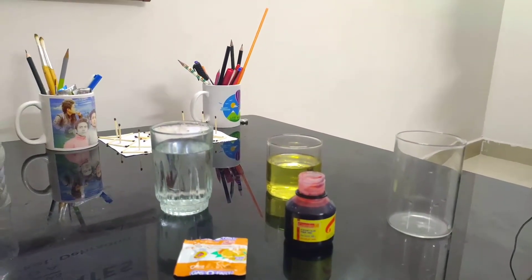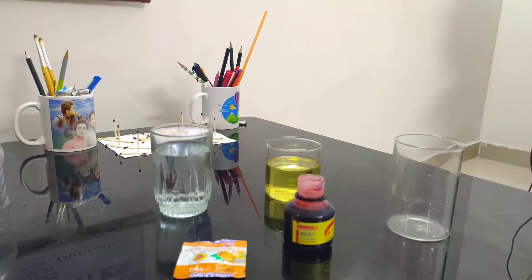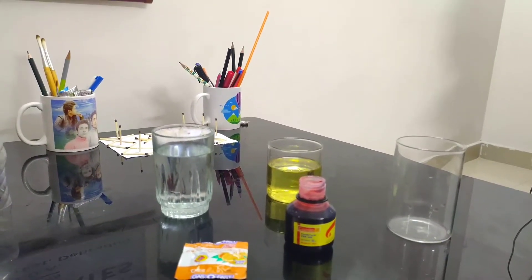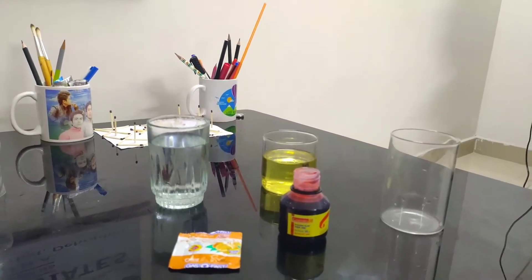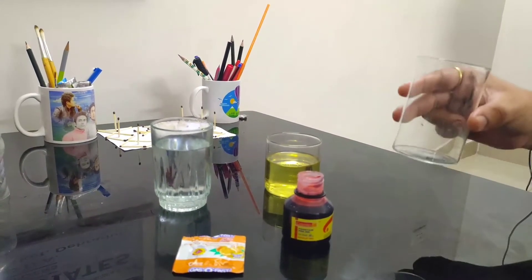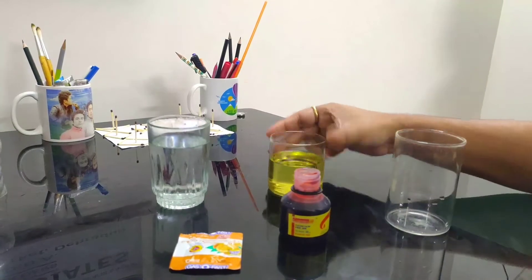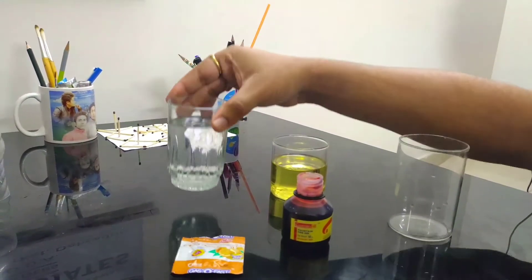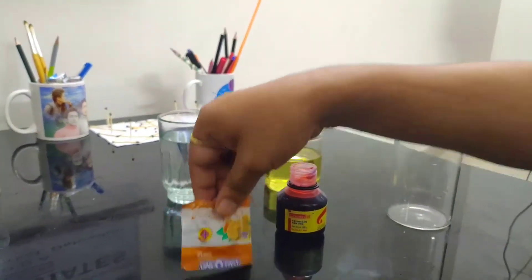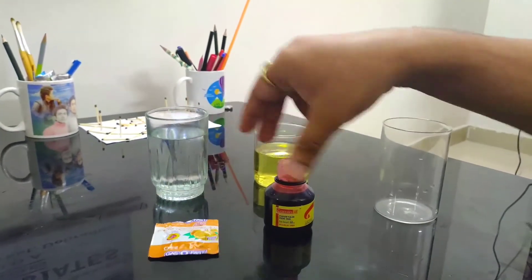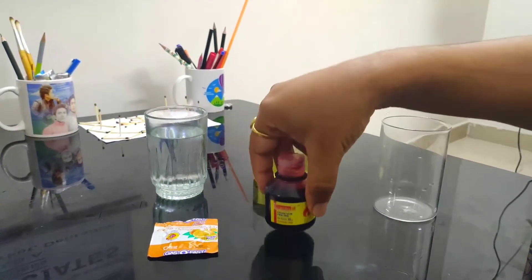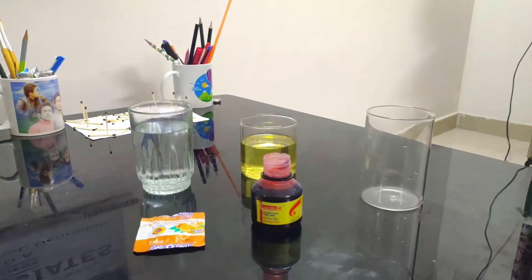Hello everyone, this is Manoj and in today's session I will tell you how to make a lava lamp. For this we need a transparent glass, vegetable oil, water, Gaso Fast tablet, and a food color. You can also use ink instead of food color.